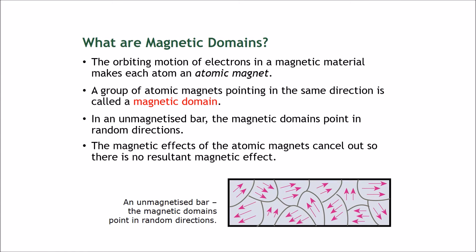What are magnetic domains? The theory behind it is that the orbiting motion of electrons in a magnetic material makes each atom an atomic magnet. A group of atomic magnets pointing in the same direction is called a magnetic domain.